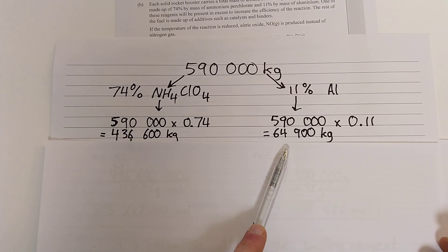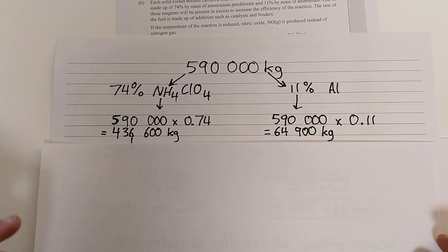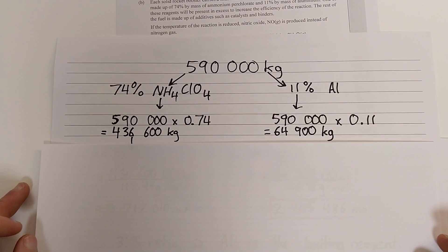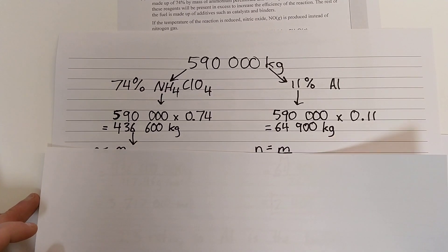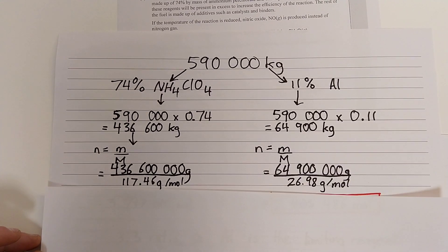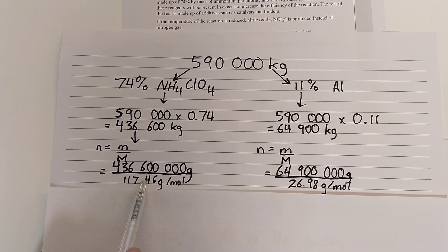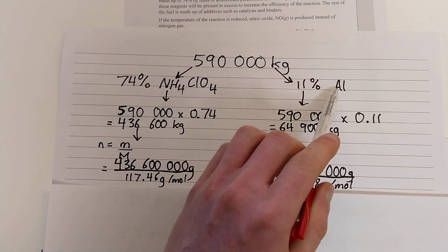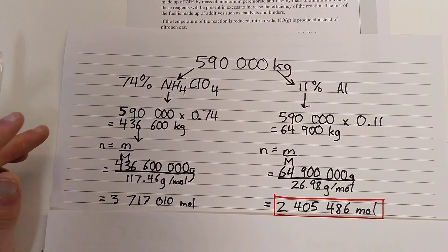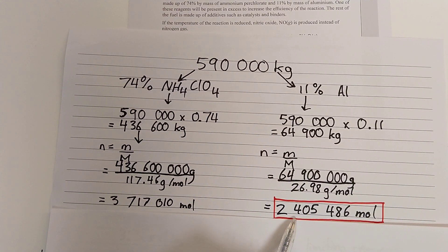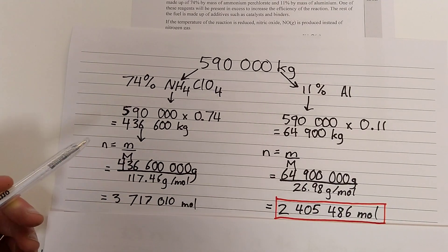We get a much smaller amount of aluminium when we take 11% of our total mixture. We want to convert that to grams and then to moles — there are 1,000 grams in a kilogram, so just multiply by 1,000 and then divide by the molar mass given in the question. When we take mass divided by molar mass, we can calculate moles of ammonium perchlorate versus moles of aluminium. We find that we have about 2.5 million moles of aluminium versus 3.7 million moles of ammonium perchlorate.